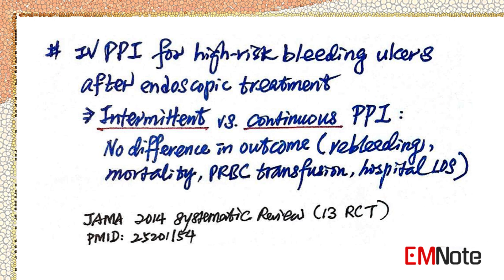Intravenous proton pump inhibitors for severe upper GI bleeding: A systematic review and meta-analysis found that the incidence of recurrent bleeding within seven days of starting an intermittent PPI regimen is non-inferior to the incidence of re-bleeding with the standard continuous infusion PPI regimen. Intermittent PPI therapy is comparable to continuous infusion of PPI in patients with endoscopically treated high-risk bleeding ulcers.